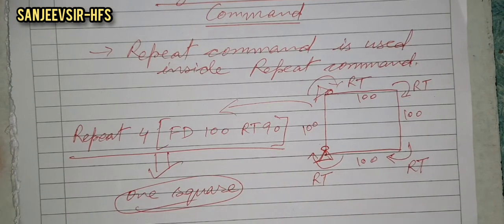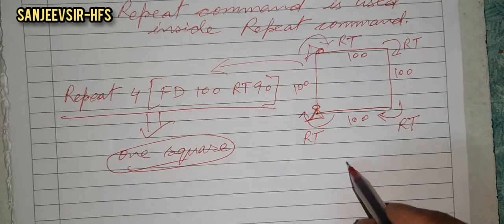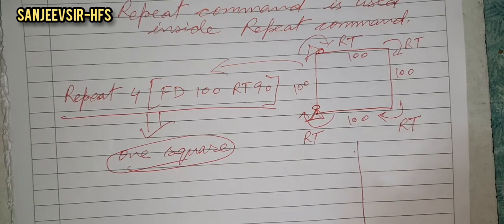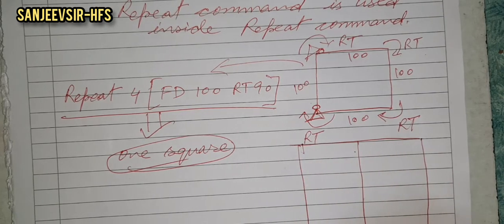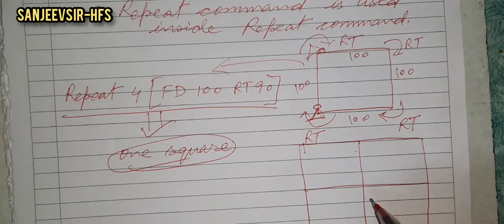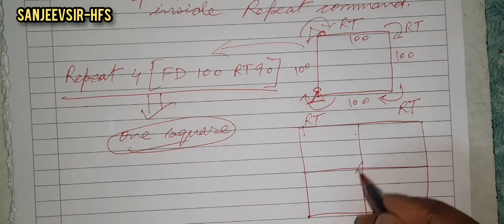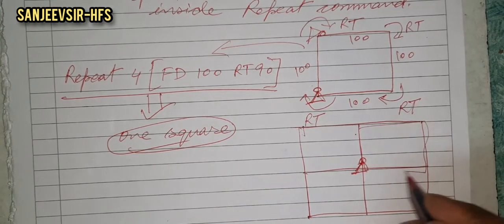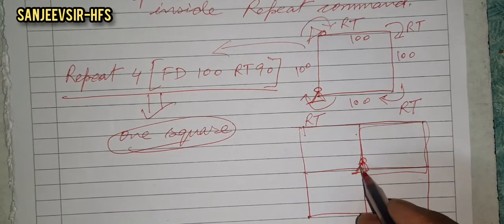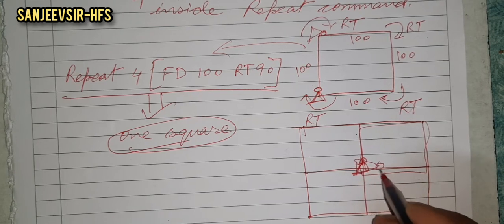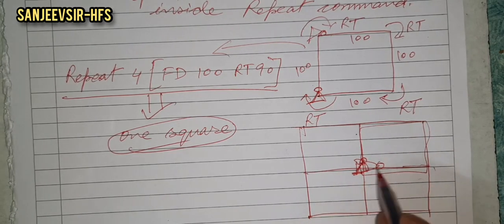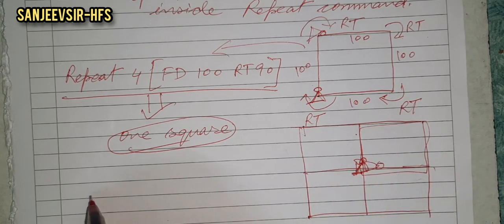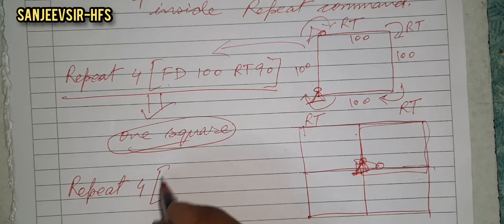When we need to draw four squares instead of one, we use nested repeat. To draw four squares, we repeat the square-drawing command four times. So we can say: repeat four times the square command — that is, repeat inside repeat.